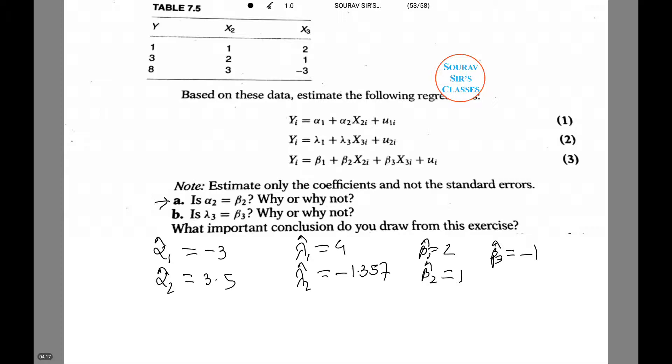Is alpha 2 equal to beta 2? Why or why not? Let's see. No. Alpha 2 is not equal to beta 2. Given that model 3 is the true model, alpha 2 is the biased estimator of beta 2.